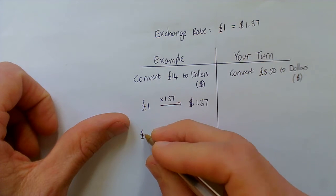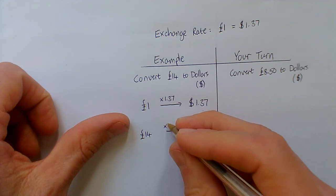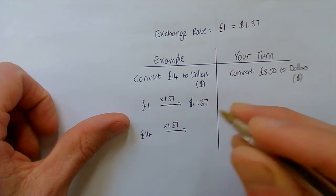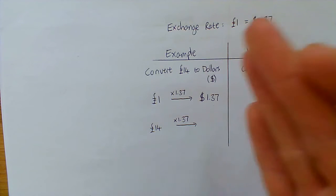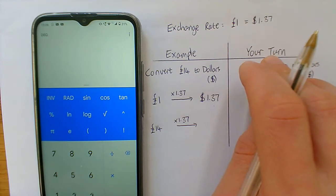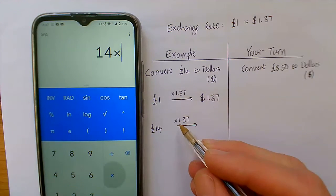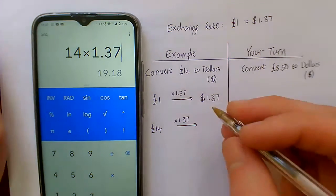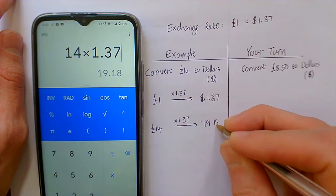So if I'm taking 14 pounds, I want to also times by 1.37. I'm doing exactly the same to the 14 pounds because that exchange rate describes how we always go from pounds to dollars. So let's do that on our calculator. We are doing 14, which is there, times 1.37. So that gives me $19.18.